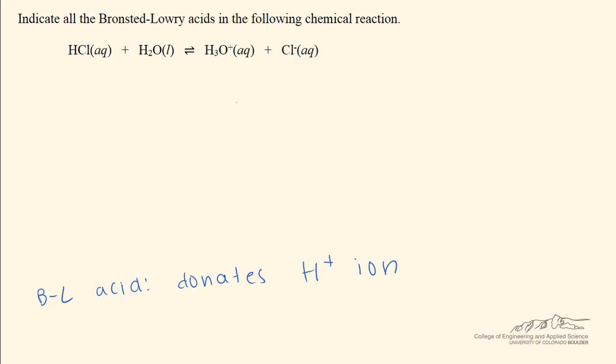A Brønsted-Lowry base is what accepts that hydrogen ion. Looking at the equation describing the chemical reaction we're given, hydrochloric acid reacts with water to form hydronium and a chloride ion. Water can serve as an acid or a base depending on the situation, but in this case the hydrogen from the hydrochloric acid is going to be donated in the form of a hydrogen ion to the water molecule to form hydronium.